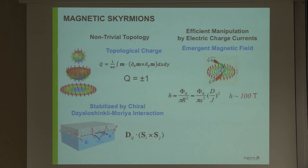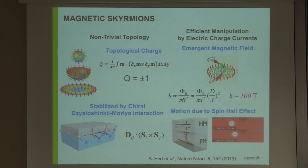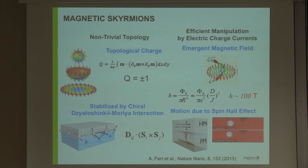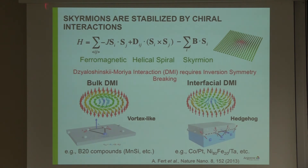Typically skyrmions are stabilized when you have, beyond the regular Heisenberg exchange interactions, a Dzyaloshinskii-Moriya interaction which favors 90-degree alignment rather than collinear alignment. These competing interactions allow such structures to be stabilized. One of the other advantages of skyrmions — particularly in films — is that we can actually move them by combining heavy metals with spin-orbit torques that produce the DMI at the interface, but also allow for spin Hall effects that create a torque to move the skyrmions, which would lead to applications.